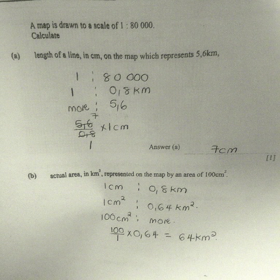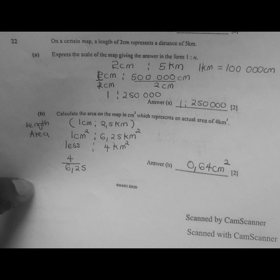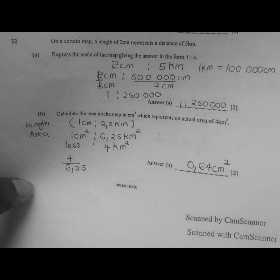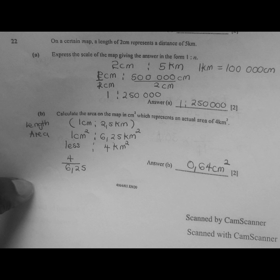Lastly, we revise a simple map problem from June 2020, number 22. It says: on a certain map, a length of 2 centimeters represents a distance of 5 kilometers. Express the scale of the map in the form 1 to n. We are given that 2 centimeters represents 5 kilometers, and 1 kilometer equals 100,000 centimeters. We convert 5 kilometers to 500,000 centimeters, then divide both sides by 2, giving a scale of 1 to 250,000.